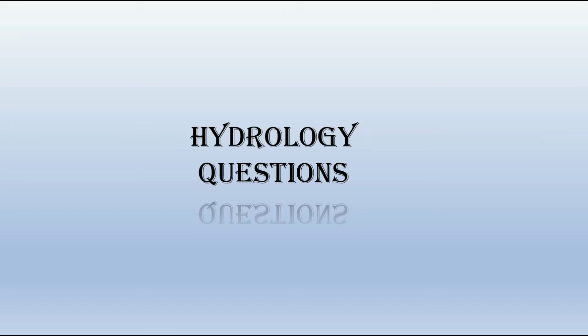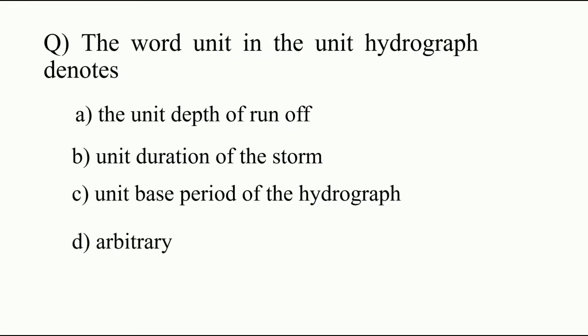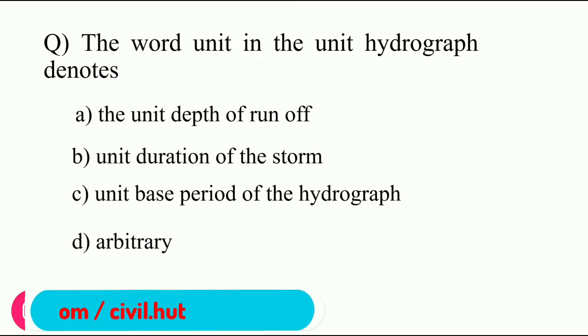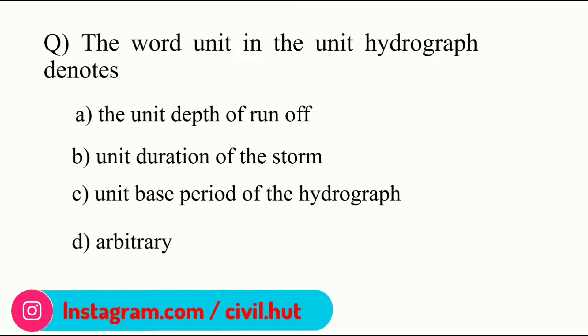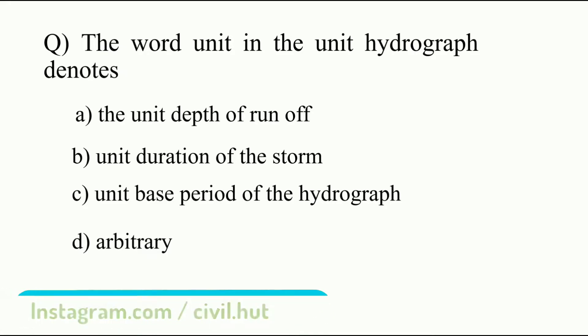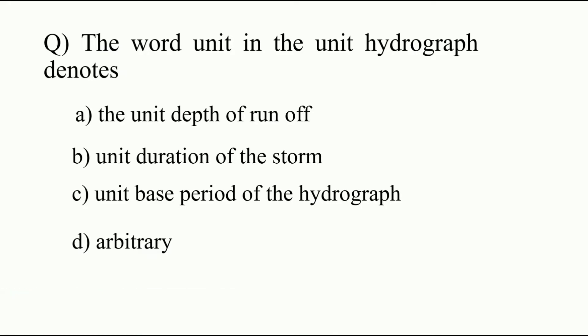First question: the word 'unit' in the unit hydrograph denotes — a) unit depth of runoff, b) unit duration of the storm, c) unit base period of the hydrograph, d) arbitrary. In the unit hydrograph, 'unit' denotes the unit depth of runoff, which means one centimeter depth of runoff. The answer is A.